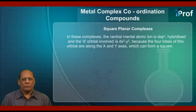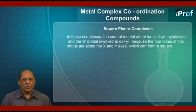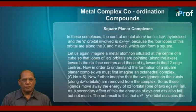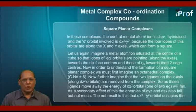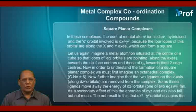In these complexes, the central metal atom or ion is dsp² hybridized and the d orbital involved is dx²-y². Because the four lobes of this orbital are along the x and y axes, which can form a square. Now, let us again imagine a metal atom or ion situated at the center of a cube so that lobes of eg orbitals are pointing along the axes towards the six face centers, and those of t2g orbitals towards the 12 edge centers.